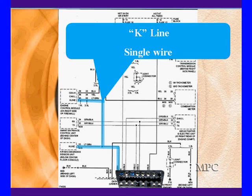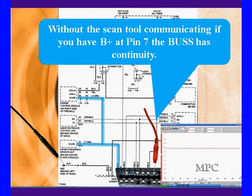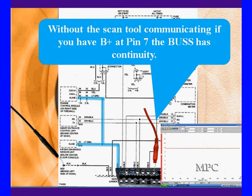We only have two modules. We hook up and start communicating. We can do some testing without having to communicate. Without the scan tool communicating, if you have B+ at pin 7, the bus has some continuity — we are hooked to one of those two modules, because they put out 12 volts when they're not talking. So if it's missing, we may have a different problem.